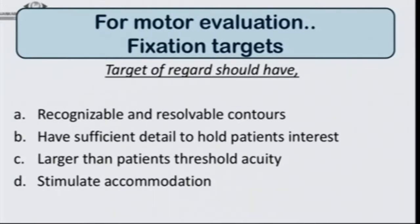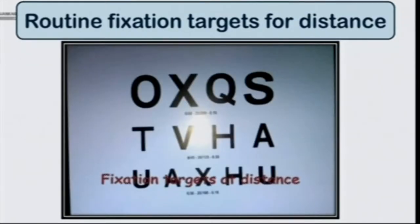The target should be recognizable and resolvable. It should hold the patient's interest depending on the age of the patient. It should be larger than the threshold visual acuity — if the visual acuity is 6/6, we use a fixation target of 6/12 on a Snellen chart, and it should stimulate accommodation. Essentially, a torch would not be a sufficient fixation target and should not be used.